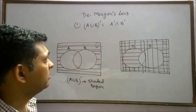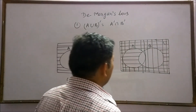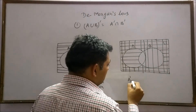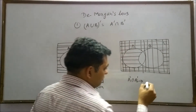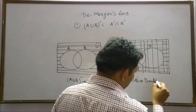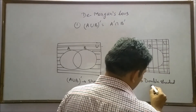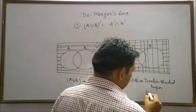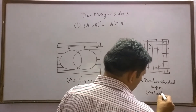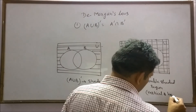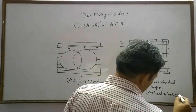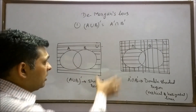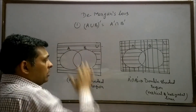The sign here is intersection. Intersection means taking the common elements between A complement and B complement. The double shaded region represents A complement intersection B complement, consisting of vertical and horizontal lines. This diagram shows that these two sets are equal.